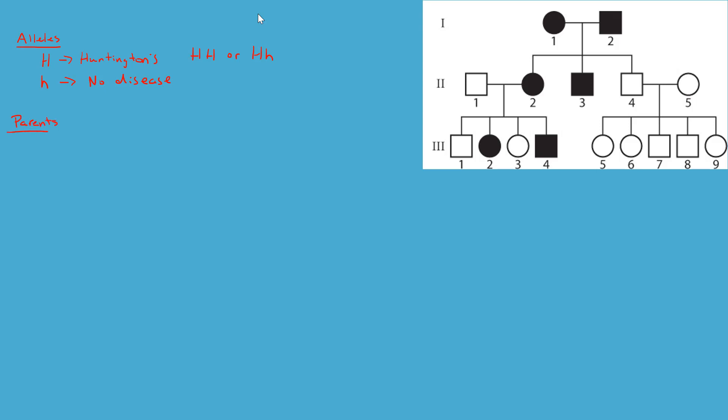Next: parents and offspring. We put those two together because that's what this chart is showing us. It shows the P1 generation — the parents up at the top — and then all of their subsequent generations. Therefore it covers parents and offspring. Up at the top, individual 1-1 and individual 1-2: these are an affected crossed with an affected.